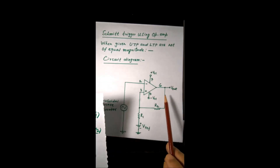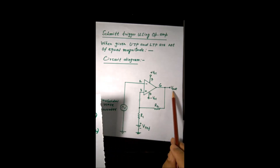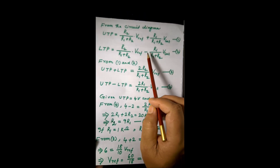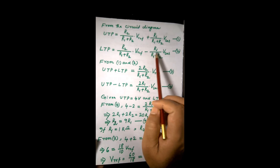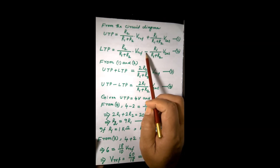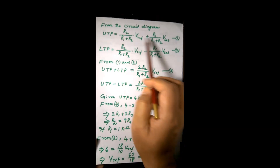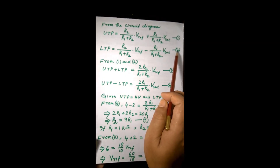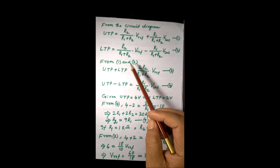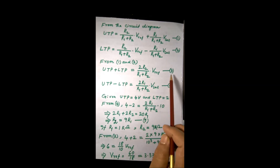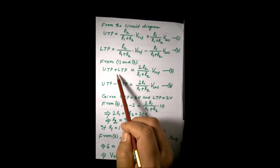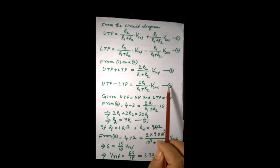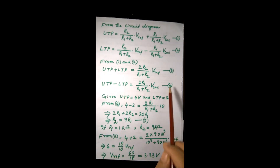LTP is the potential at the same point when V_sat is minus. Therefore only the V_sat term changes sign to minus. Equation 1 is the expression for UTP and equation 2 is the expression for LTP. Now, summing equations 1 and 2 gives equation 3, and subtracting them gives equation 4.